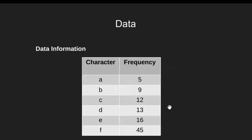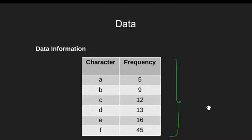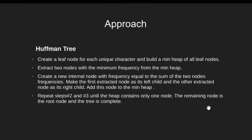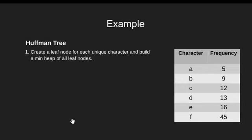Now let's see how this compression work is carried out using Huffman coding technique. This is the sample data information. Our data consists of 6 unique characters and these are their frequencies. Let's have the Huffman algorithm. These are the 4 steps that will help us to build a Huffman tree, which in turn will provide us the Huffman codes for all the characters. We have the data, we have the algorithm, so let's do a quick dry run and build a Huffman tree.